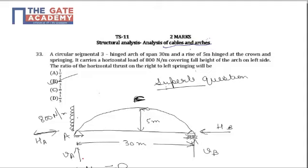Here it is given that there is a 3 hinged arch which is hinged at springings. These two points are called as springings and the topmost point is called as crown of the arch, and 3 hinges are provided.